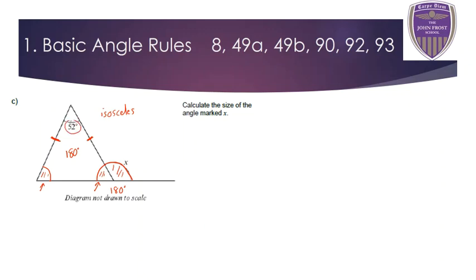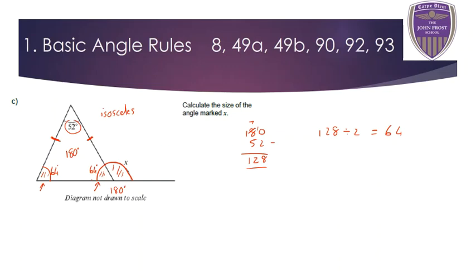If I take 52 degrees away from 180, it leaves me with 128 degrees, and that's got to be shared equally between the two base angles. So I divide 128 by 2, which is 64. So I know that each base angle is 64 degrees. I'm interested in this 64 with the 180, so taking 64 away from 180 tells me that X is 116 degrees.